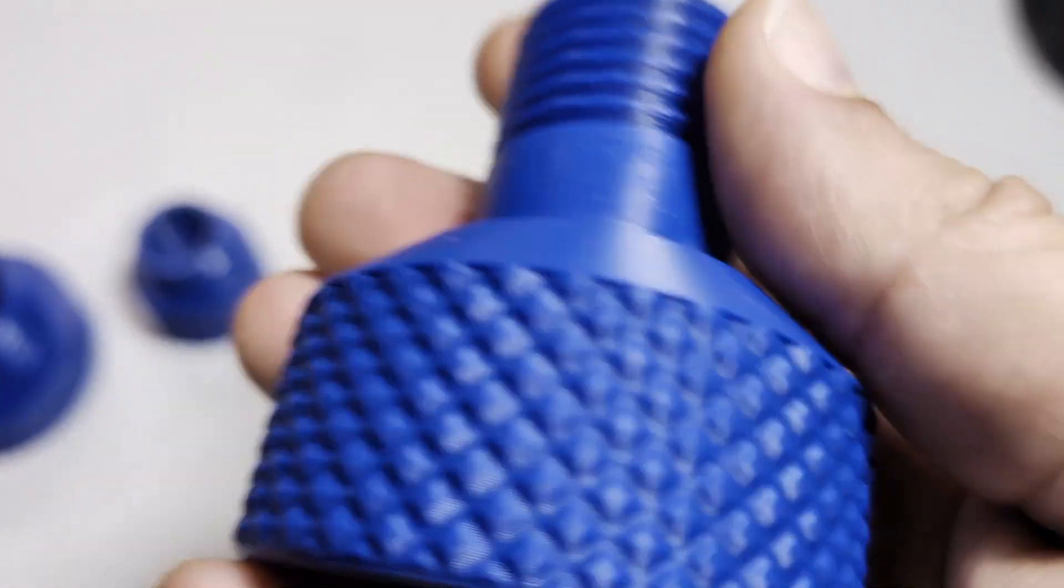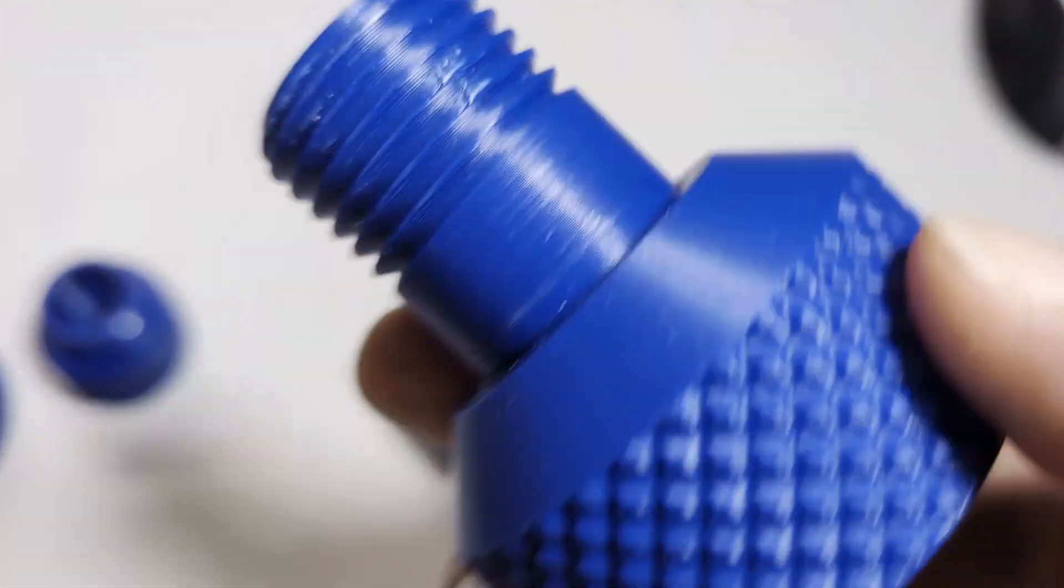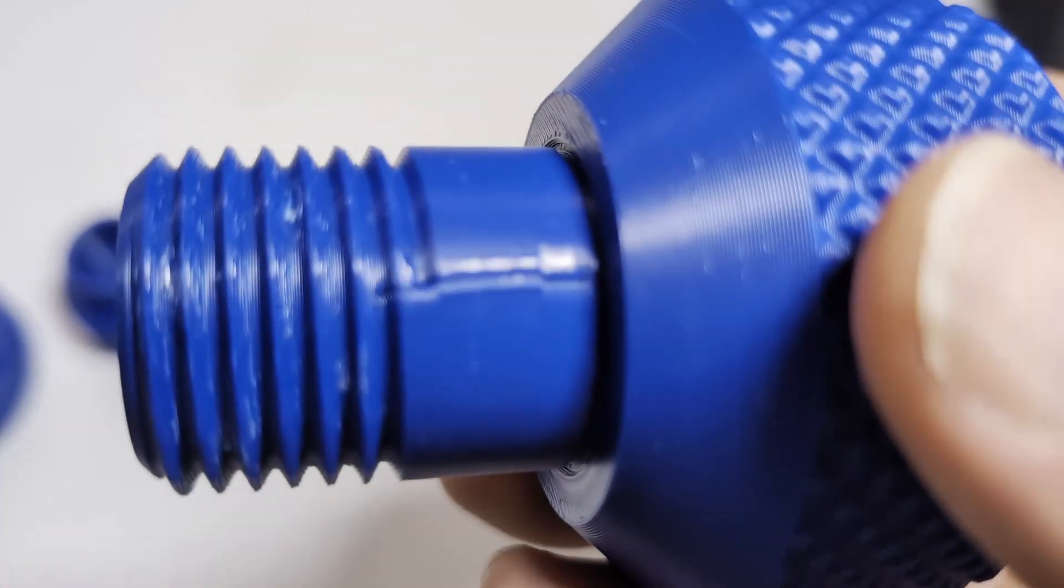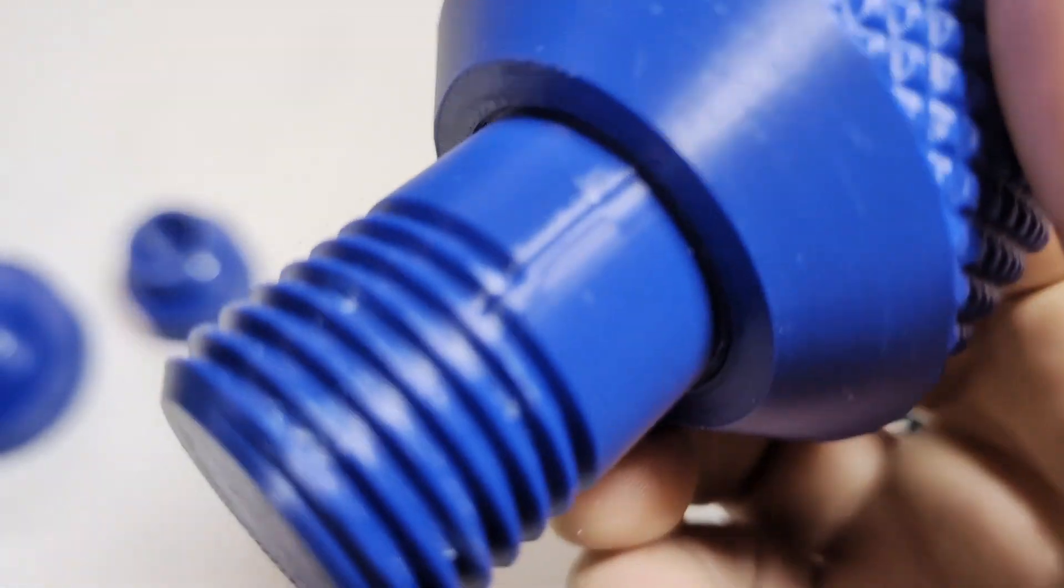The first centering bolt had threads too tight and the printing seam that caused eccentricity. I increased the diameter slightly and shaved the seam manually.